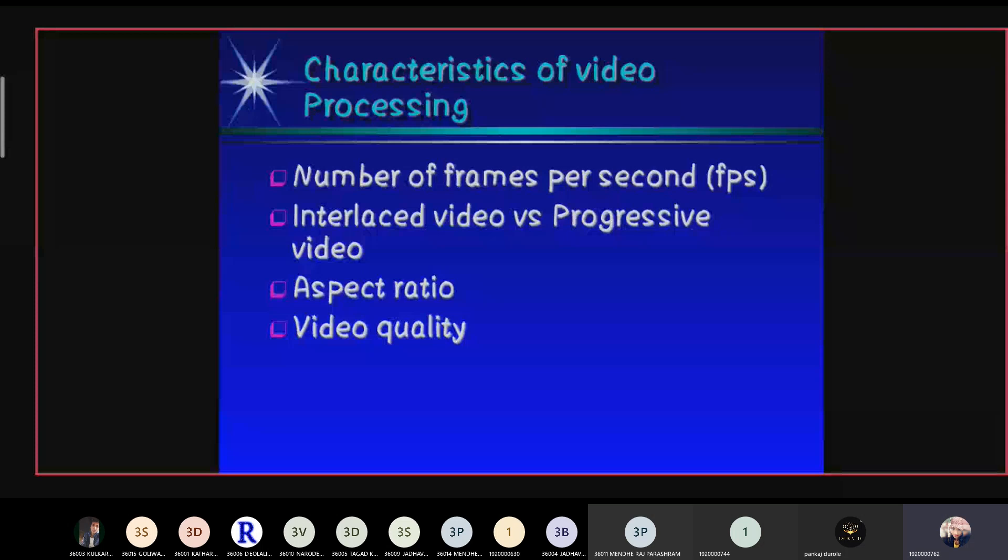Next is aspect ratio. Aspect ratio defines the dimension of the video screen and video elements. The video format is rectilinear, which moves in straight lines, and the ratio is between width and height. Next is video quality. Video quality can be measured with formal metrics like peak signal to noise ratio or with subjective video quality using expert observation.